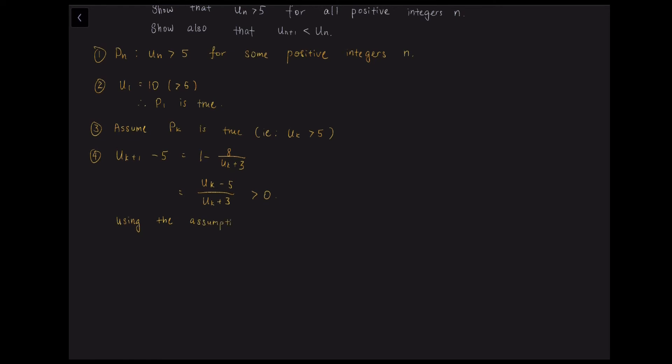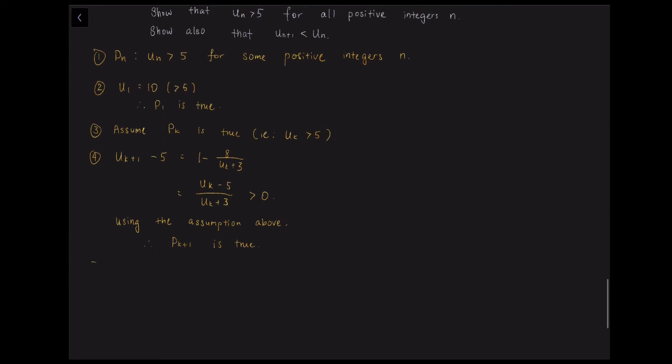And it must be larger than 0 because we know that uk is bigger than 5. So something bigger than 5 minus 5 must be positive. And something bigger than 5 plus 3 is always positive. So the whole thing is positive. So pk plus 1 is true.